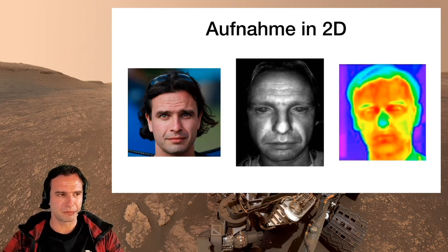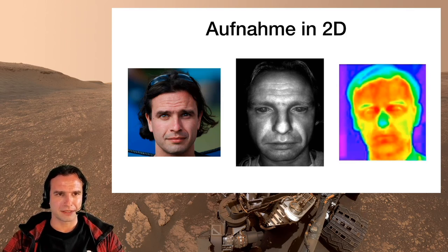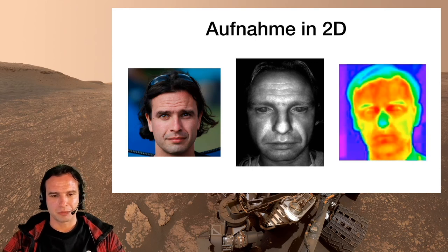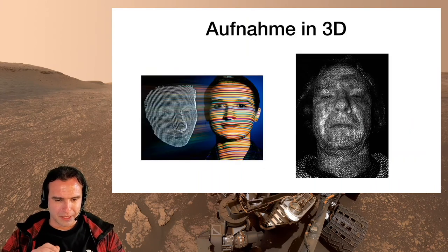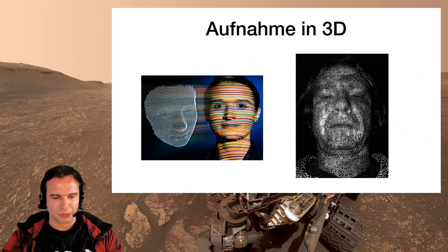These different wavelengths have different advantages and disadvantages. Visible light is quite susceptible to other light sources, whereas far infrared has much less resolution.